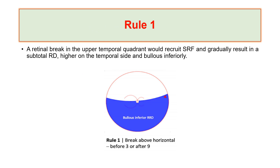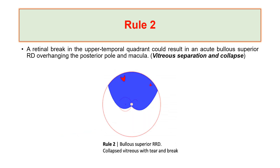David Wong's Rule 1: if there is a break in the superior temporal quadrant, there will be subretinal fluid inferiorly, resulting in a subtotal retinal detachment higher on the temporal side with a polus inferiorly. Therefore, if you see inferior polus rhegmatogenous retinal detachment, suspect the break is in the upper temporal quadrant.